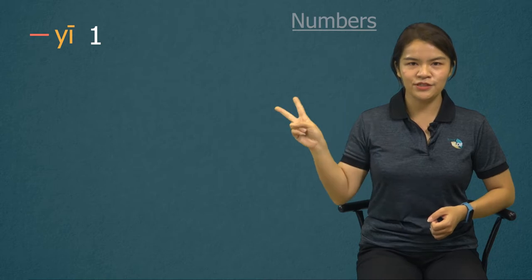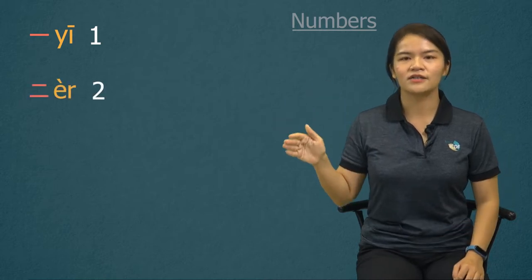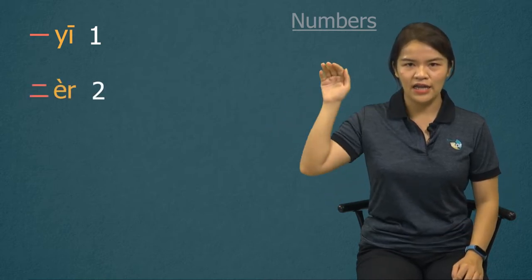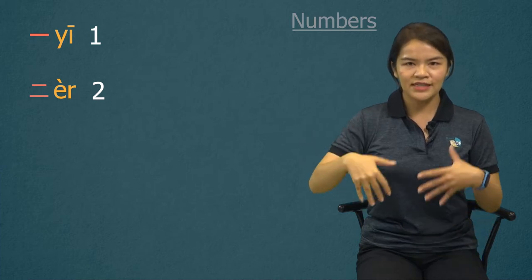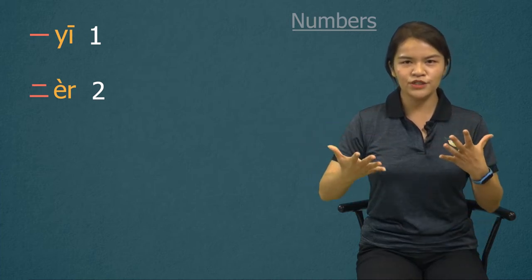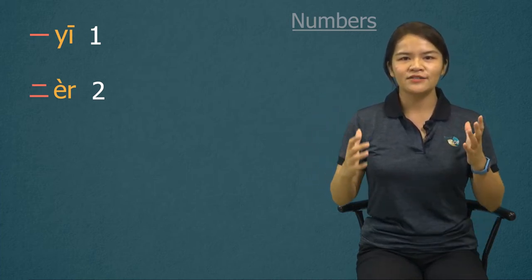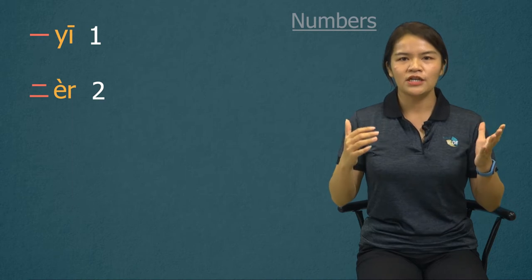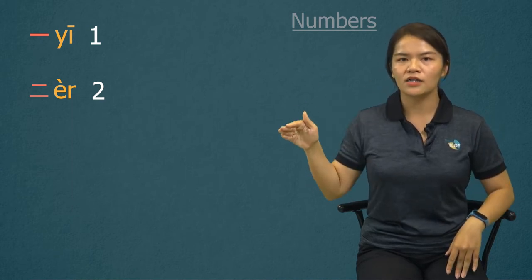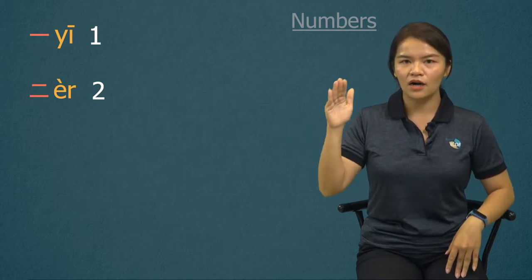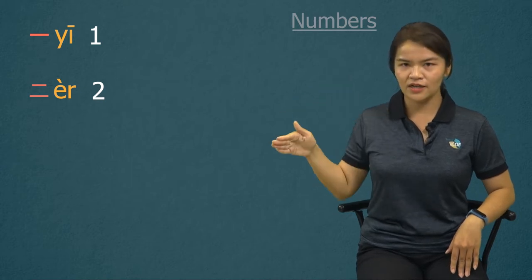Number two. 二, 二. It's a falling tone. So release your emotion to be excited. To pronounce this word, you should roll your tongue. 二, 二. Falling tone, 二.